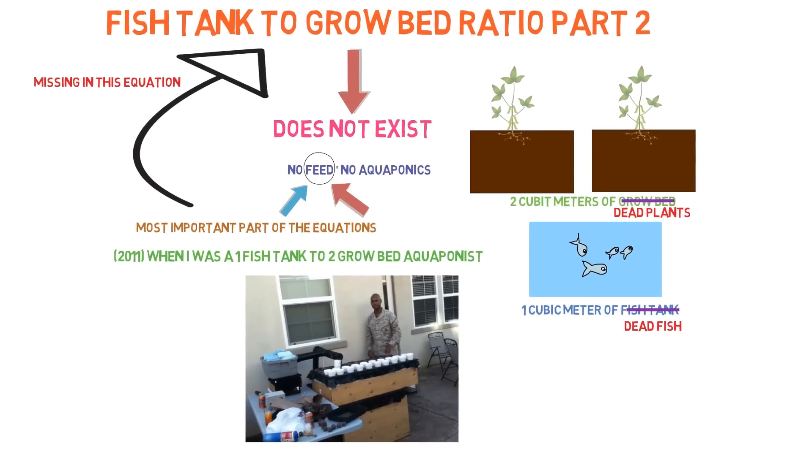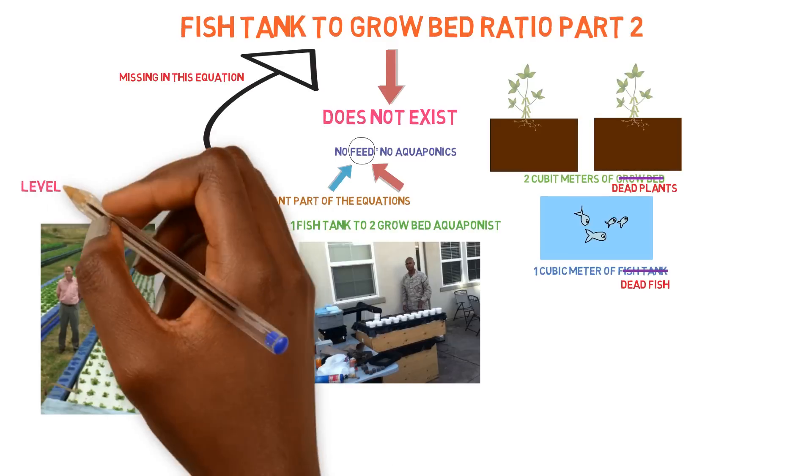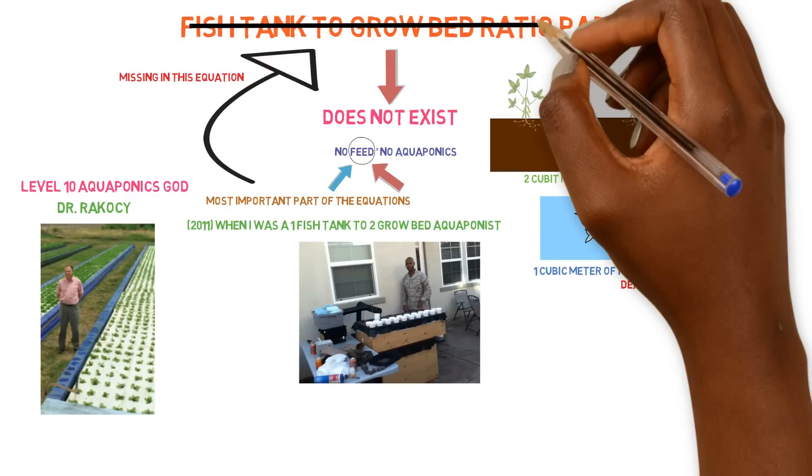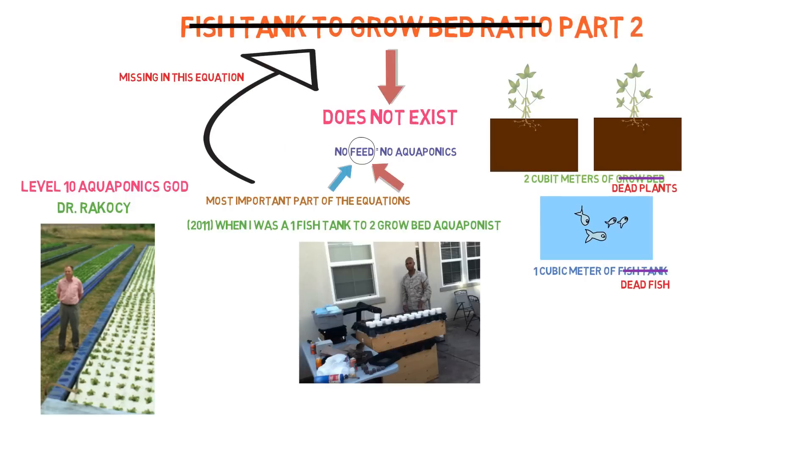And then I came across the granddaddy of aquaponics, Dr. Rakocy, and then it cleared things up. We were able to clear things up and find out that there's actually a proven method that works that you can use to get predictable results and don't have to say this to that many grow bed ratios. You can actually give the whole equation in order to get the predictable results that you're looking for.